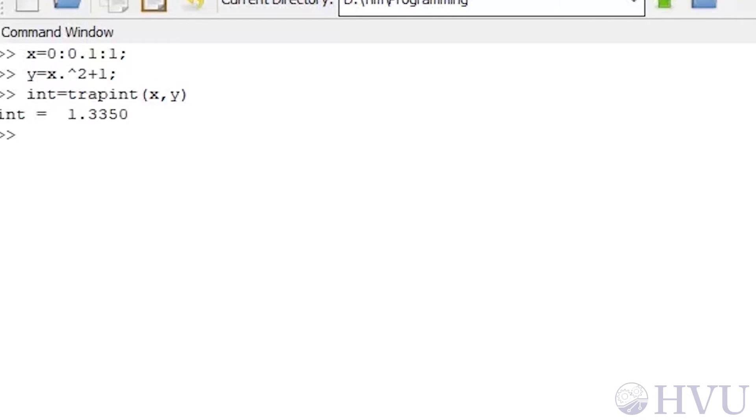I'll send these arrays to my trapezoidal integration function and return the result as int. The function returns 1.335 as the estimate to the integral. The exact value of the integral is 1 cubed over 3 plus 1, which is 1 and a third. So the difference between the actual integral and my numerical estimate is pretty large.